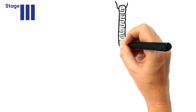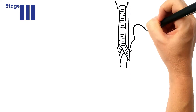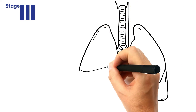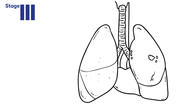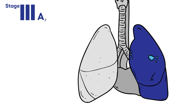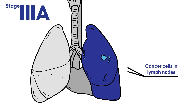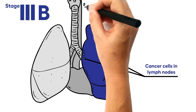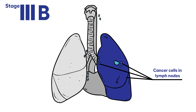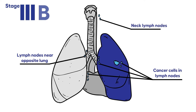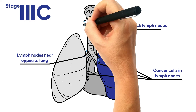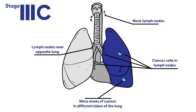Stage three non-small cell lung cancer. The cancer is found in one lung and has spread to the chest and to lymph nodes further away from the lungs. It is divided into substages 3a, 3b, and 3c based on the size and number of tumors, the location and types of lymph nodes found to have cancer, and exactly where the cancer has spread in the chest area.